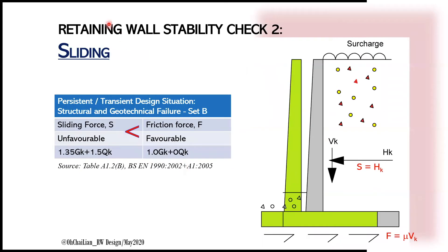It is also necessary to check for sliding failure along its base. The sliding force from the horizontal force shall be less than the friction force contributed by the vertical force and friction coefficient. Under consideration for combination of structural and geotechnical failure, Eurocode suggests factors for unfavorable situations caused by sliding as 1.35 for Gk and 1.5 for Qk, whereas for favorable cases contributing to friction, factors are 1.0 for Gk and 0 for Qk.